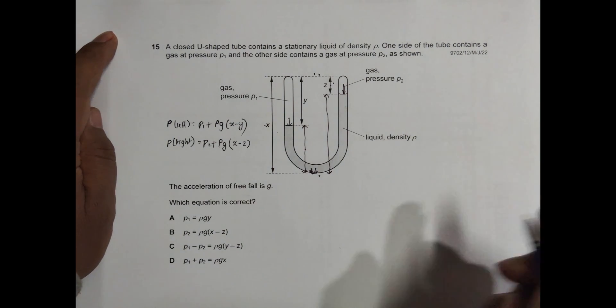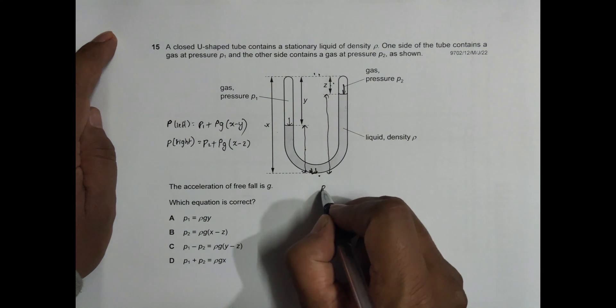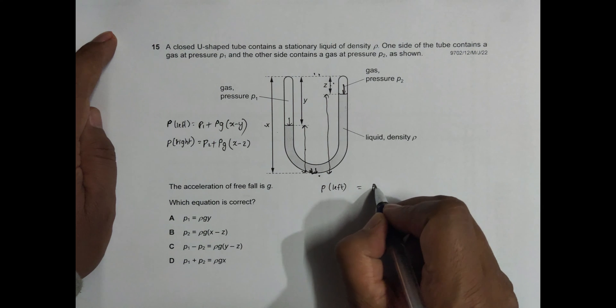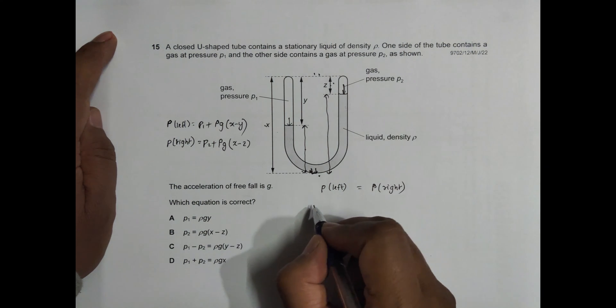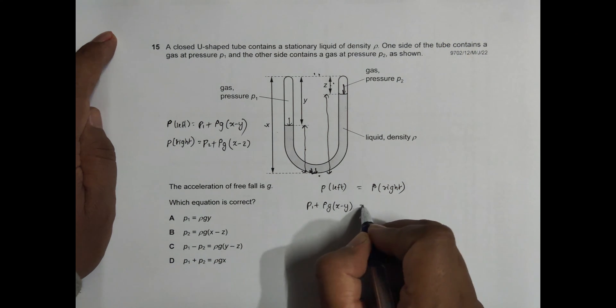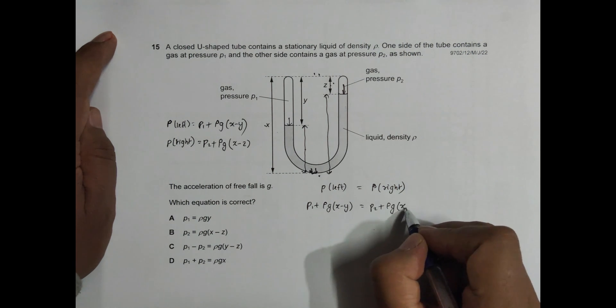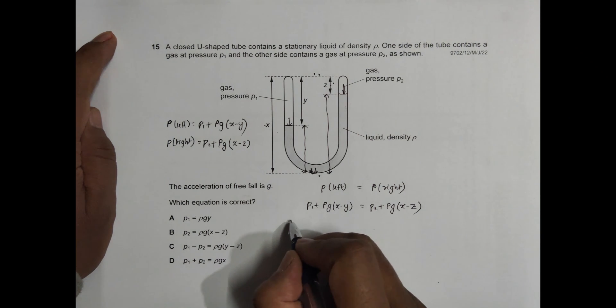Now we have the two pressures equal since the system is in equilibrium, so pressure left is equal to pressure right. This gives me P1 plus ρg(x - y) equals P2 plus ρg(x - z). So we can open up the bracket.